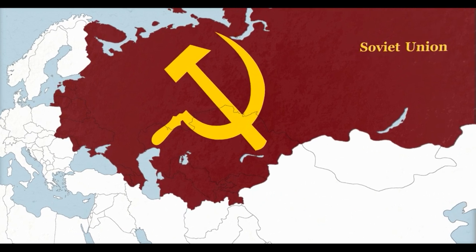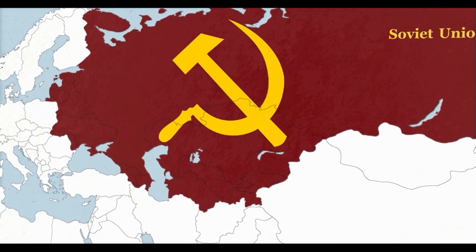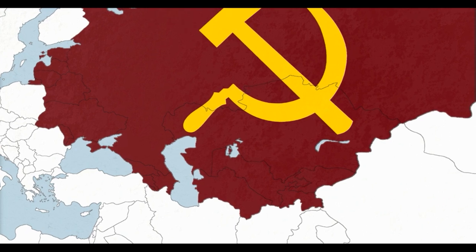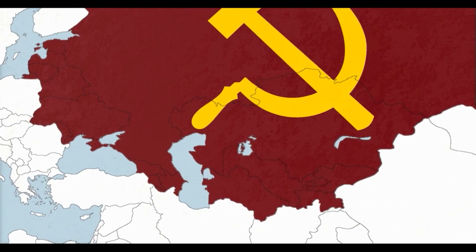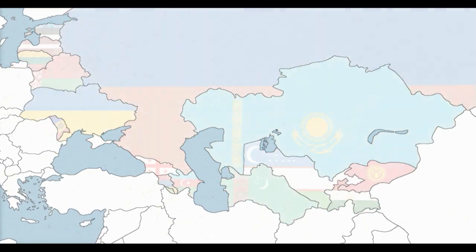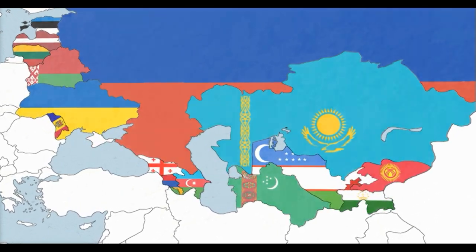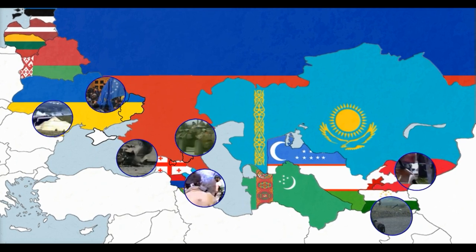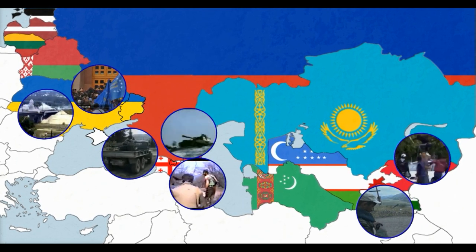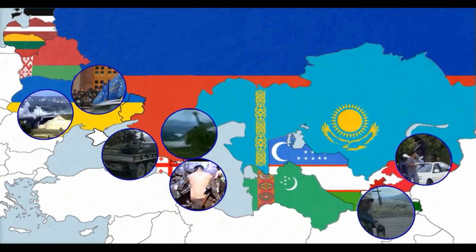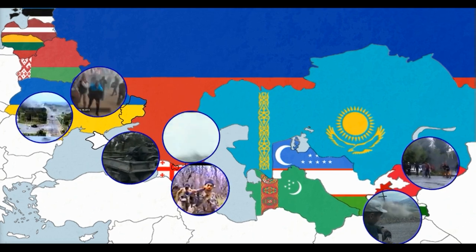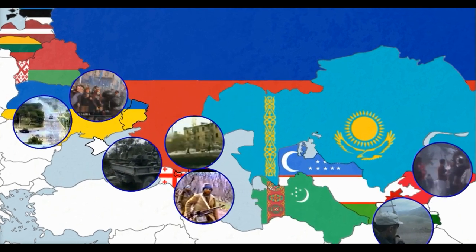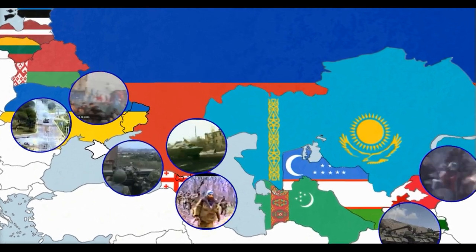The Soviet Union was involved in almost every significant historical event after its formation in 1922. After its collapse in 1991, it left behind 15 independent countries, several disputed borders, as well as countless tribal conflicts. To see the full picture of how this expansionist world power collapsed under its own weight, let's look back at how they became such a large power in the first place.